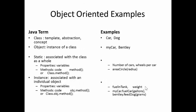Let's look at some examples. The Java term class can be seen as a template, an abstraction, a concept. So we can talk about the concept of a car, the concept of a dog.